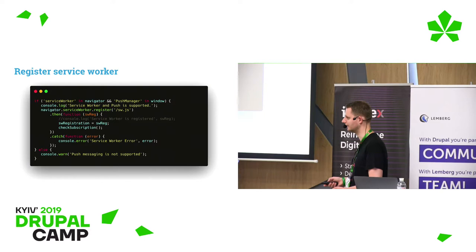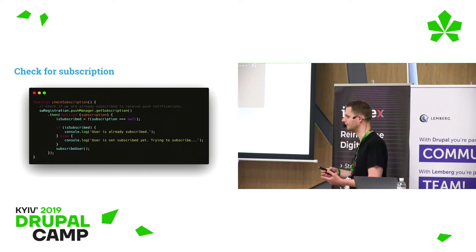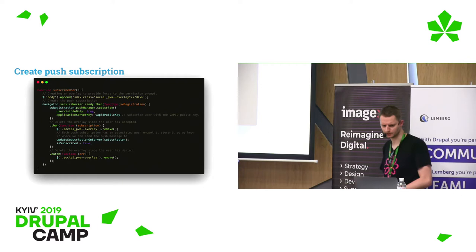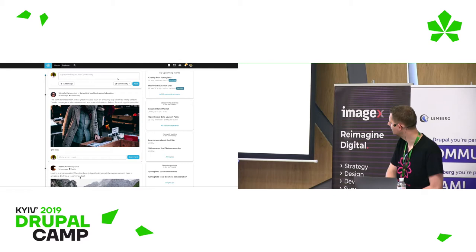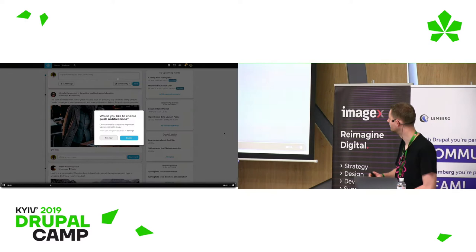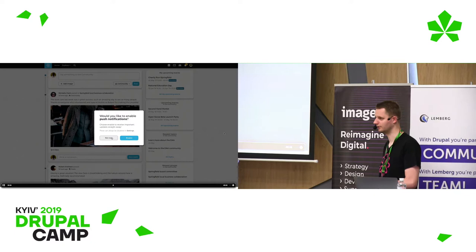Here's where we register the service worker and check if push notifications are supported. If supported, we check if maybe the user is already subscribed — we don't want to do anything there. Otherwise we try to subscribe them. In the 'create push subscription' step, we use the push API to subscribe the user. You can see the custom overlay we show first — the user can click 'Not now' and we won't even show the browser prompt. If they allow it, we go to the browser prompt and then subscribe the user.